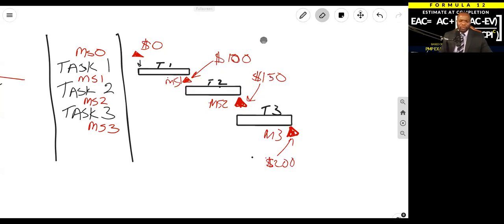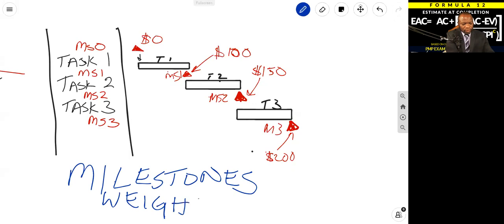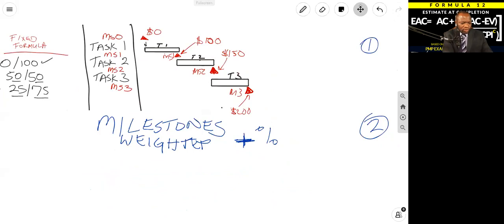In this episode, we're going to take a look at a different method. They're very similar, but there is one distinguishing factor. This, again, we call milestones weights with percent complete.